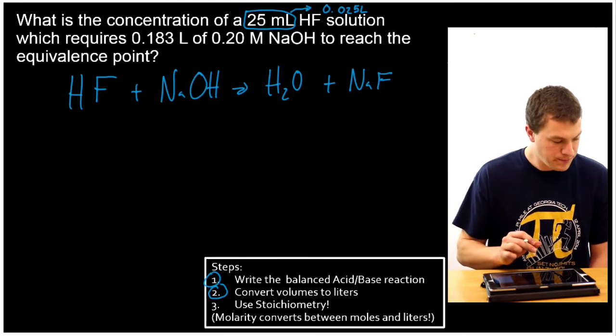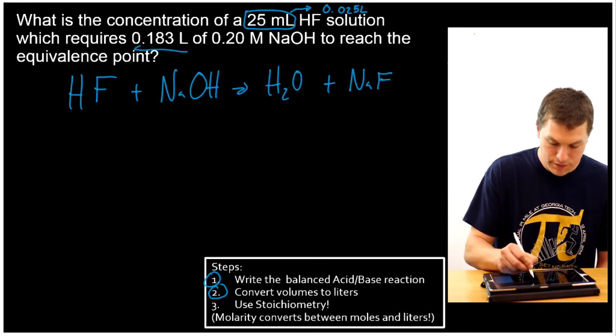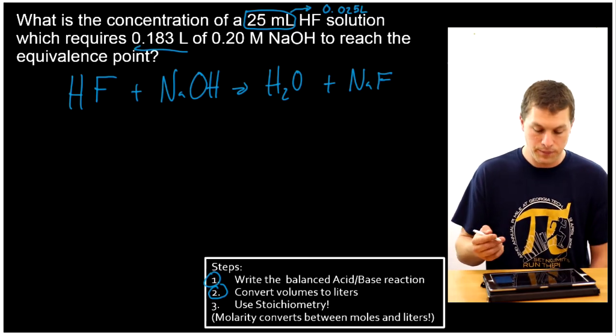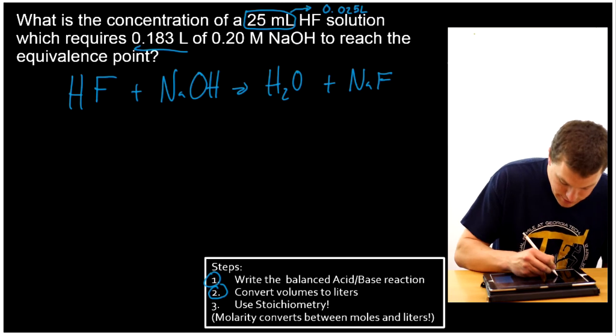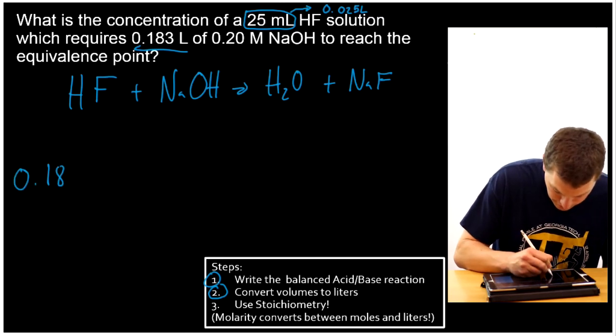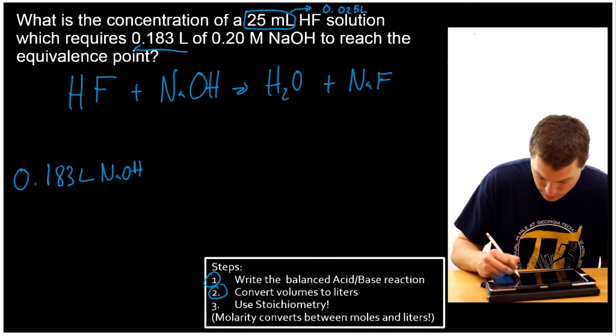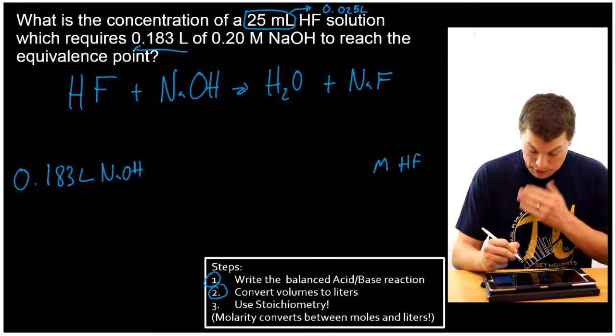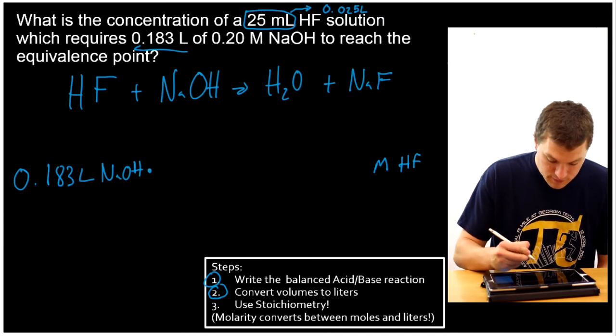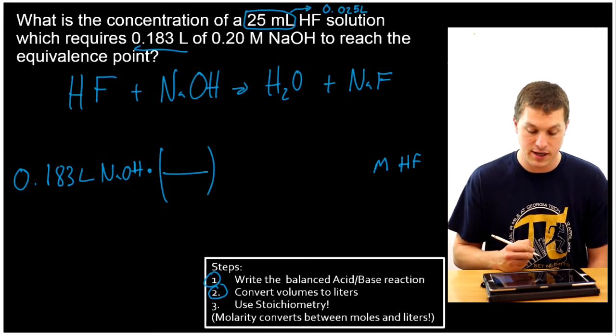Alright, and now I'm going to use stoichiometry. In this case, I'm going to once again start with my volume of the thing I have the most information about. The difference here is I'm not going to volume, I'm going to be going to concentration. So I'm going to start with 0.183 liters of my sodium hydroxide. And now I want to go to molarity HF. And so what I do there is the first two steps are going to look exactly the same as before. I have 0.183 liter sodium hydroxide.